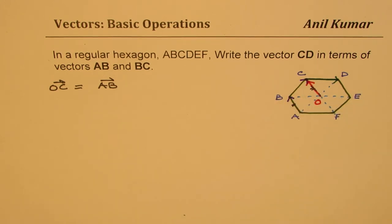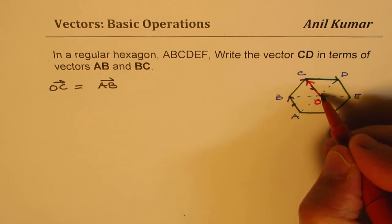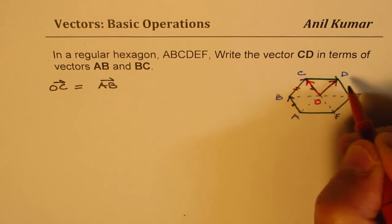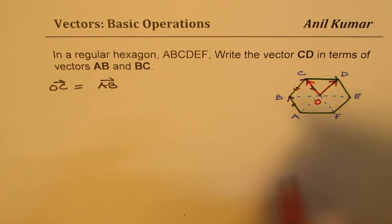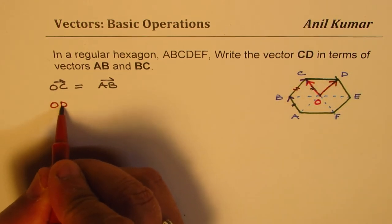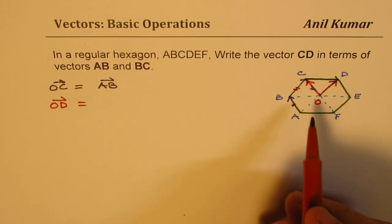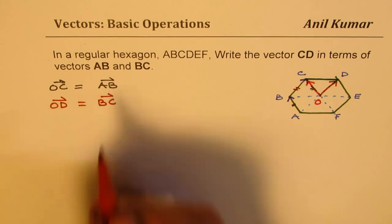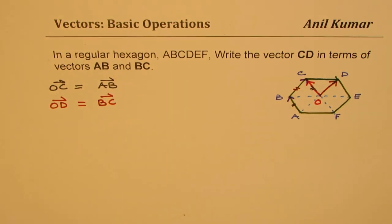Now similarly from this construction you can see that OD is same as BC. So we get O to D is actually equal to B to C. So in vectors you can actually move your vectors from one place to another, locate them somewhere which just helps you to solve the equation.